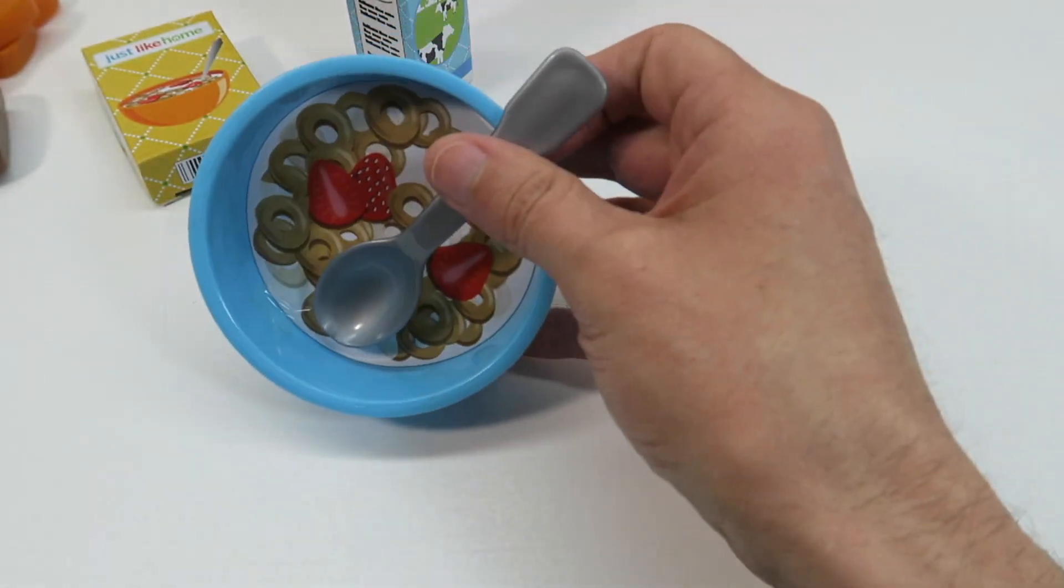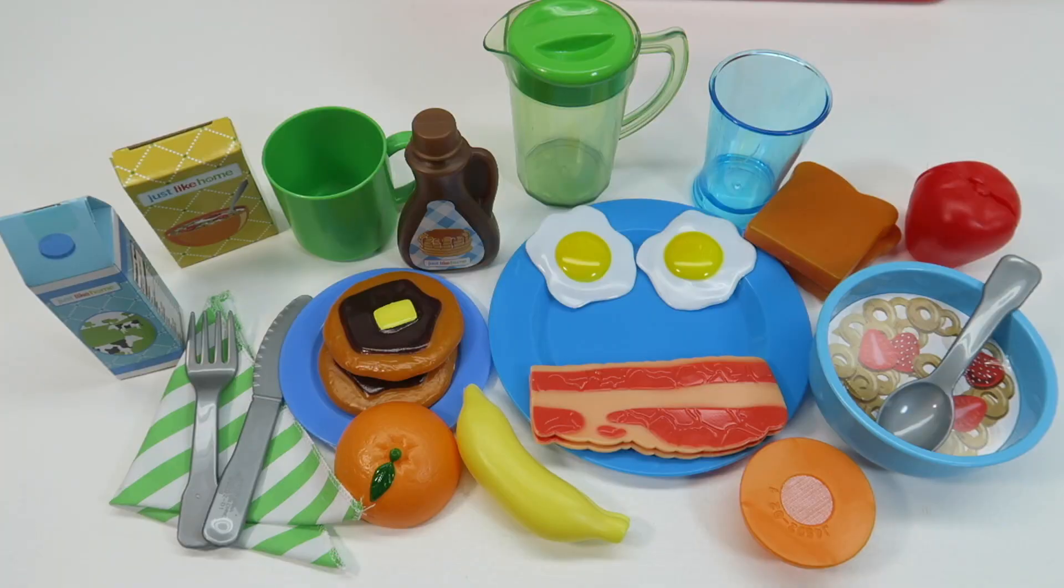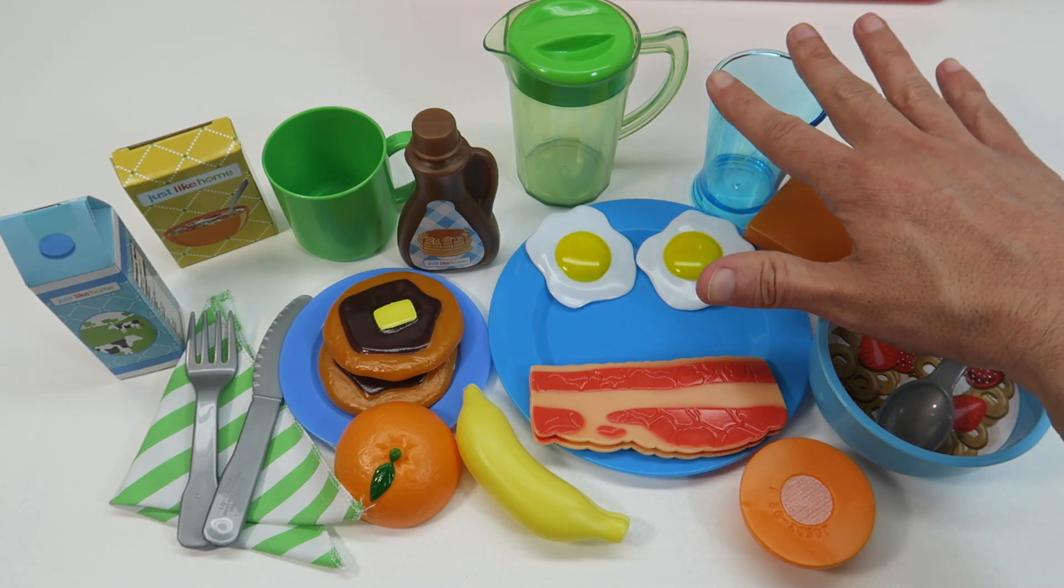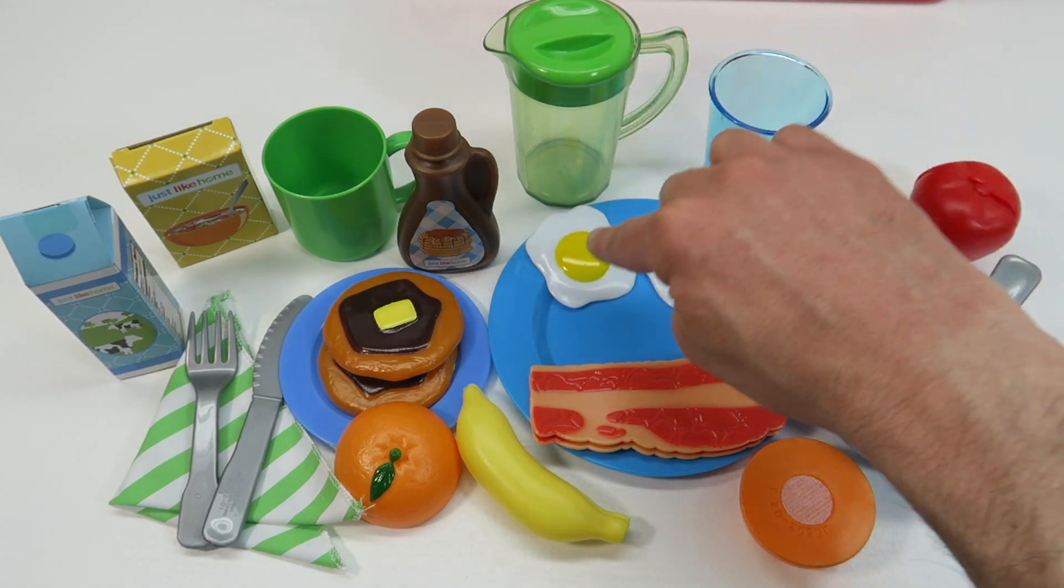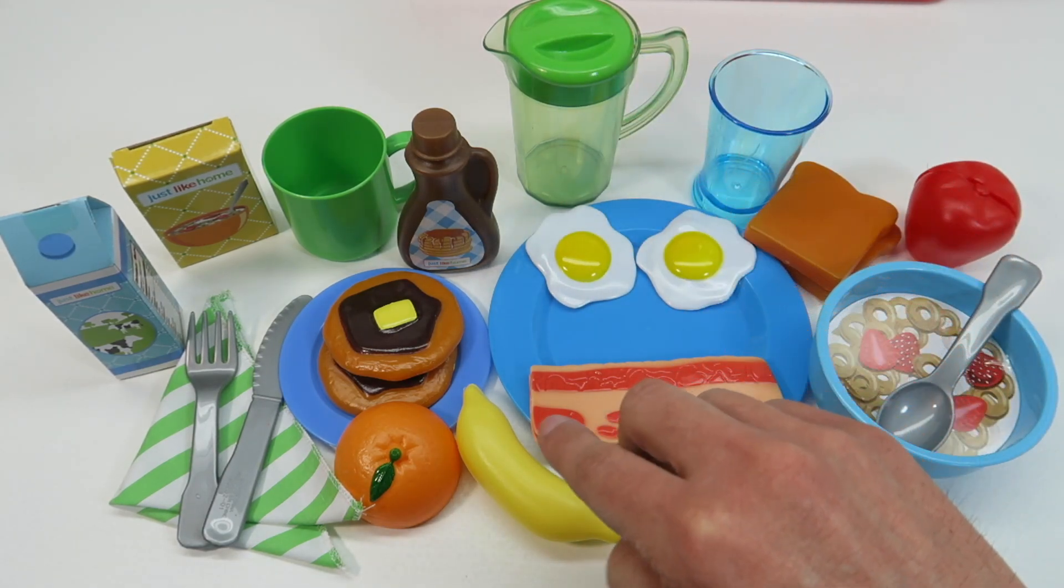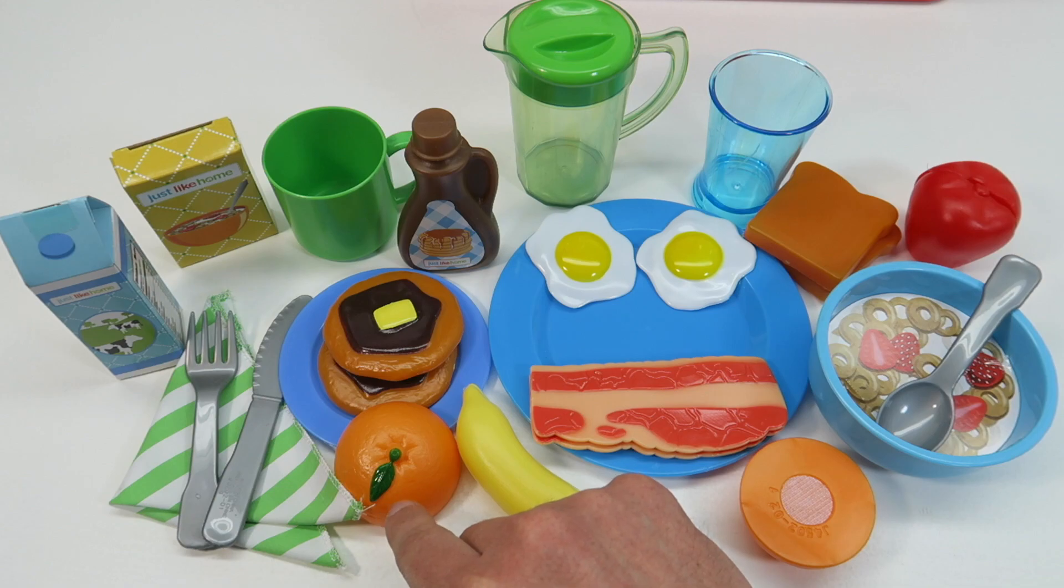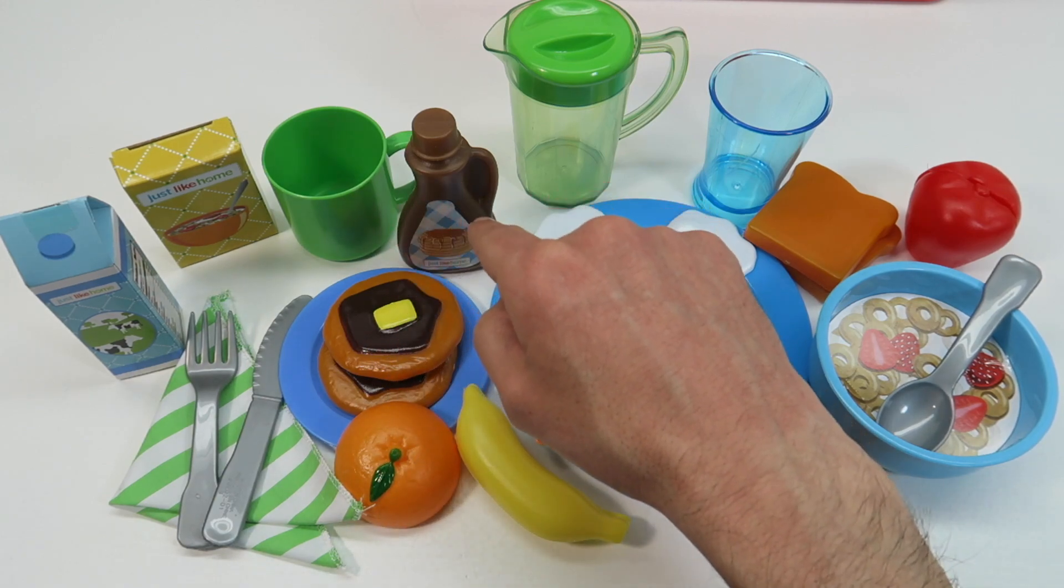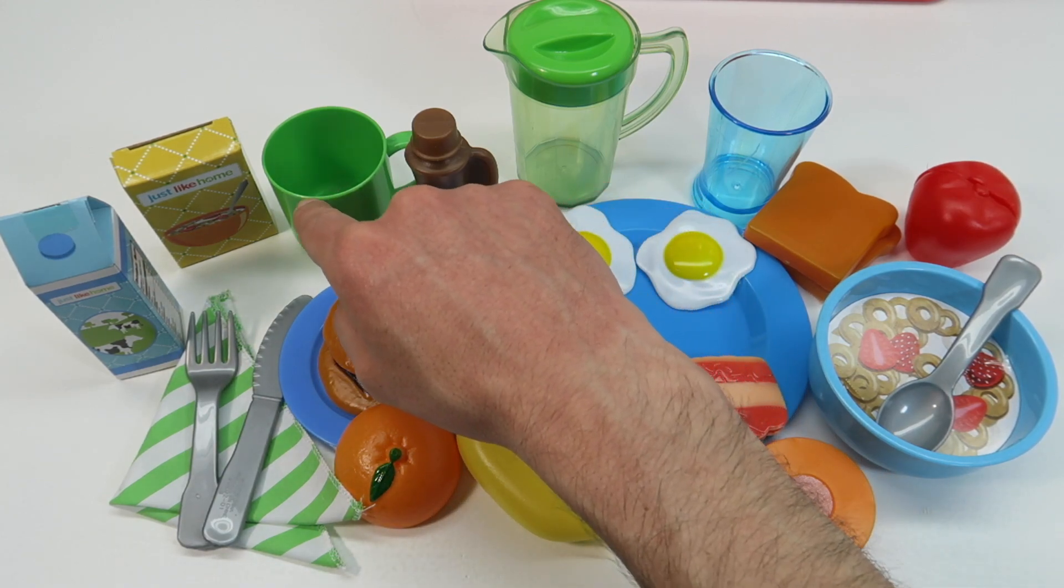All right, so there's our cereal. Who's going to help me eat all this? We have an apple, bowl of cereal, an orange, toast, glass of juice, a pitcher of juice, two eggs, bacon, banana, oranges, pancake syrup, milk, cereal, milk.